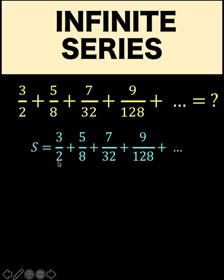In order to get this 8, we multiply 2 by 4. To get 32, we multiply the denominator 8 by 4. And to get 128, we multiply 32 by 4. So, for our first step here, let's multiply both sides of this equation by 4.